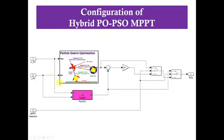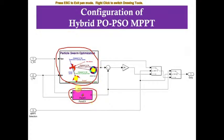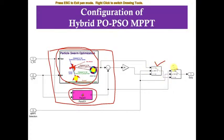Inside the hybrid PO-PSO MPPT block, there is a PSO MPPT algorithm and a PO MPPT algorithm for maximum power point tracking. We combine both PO and PSO, and use two selection switches to select the configuration — whether to operate with hybrid PO-PSO, PO MPPT, or PSO MPPT. It receives two inputs: voltage and current of the PV panel. Based upon these, it generates the duty cycle to control the IGBT of the boost converter to extract the maximum power at the global point.